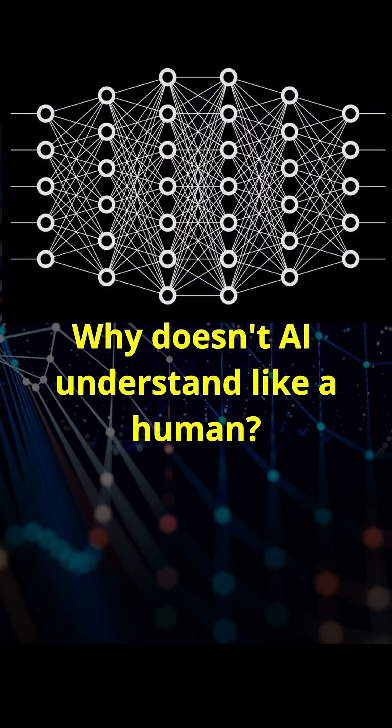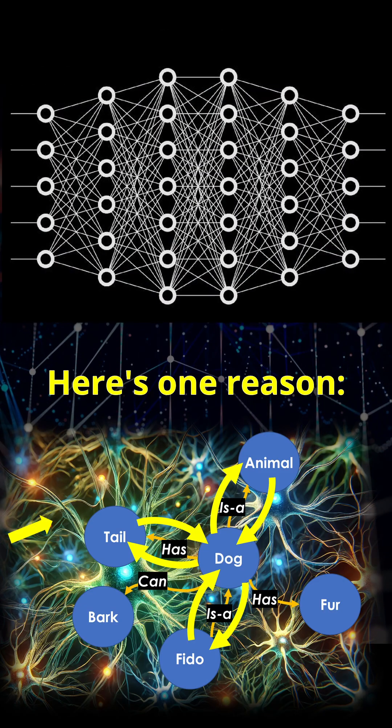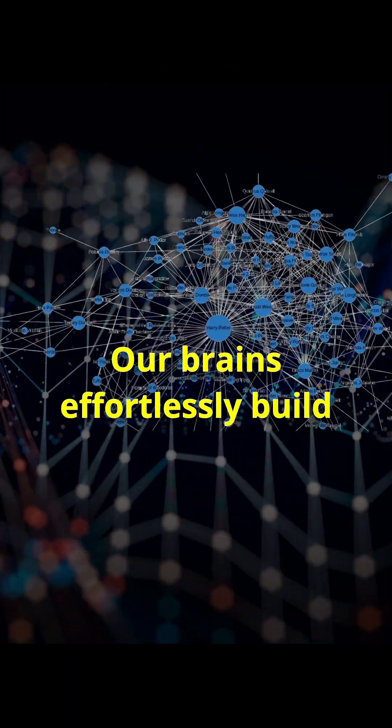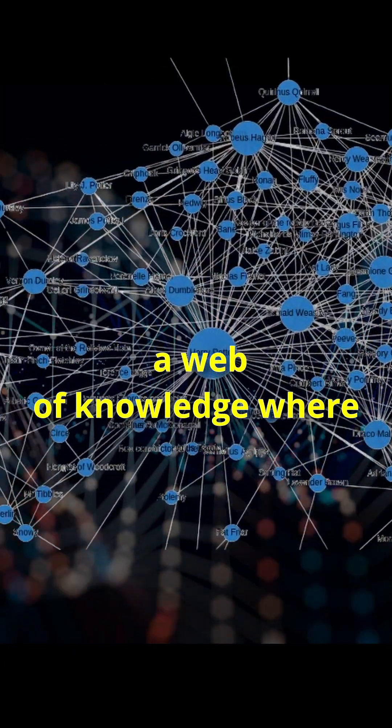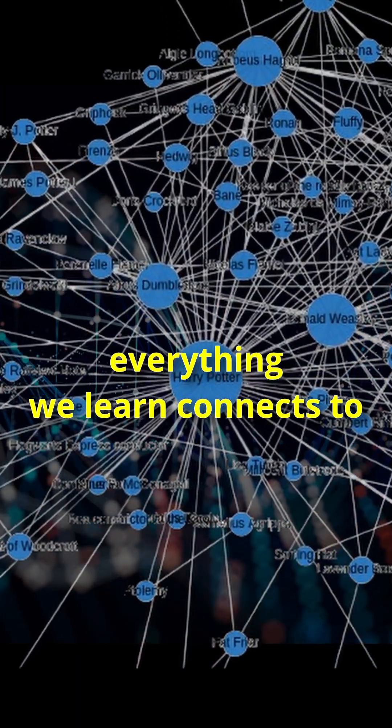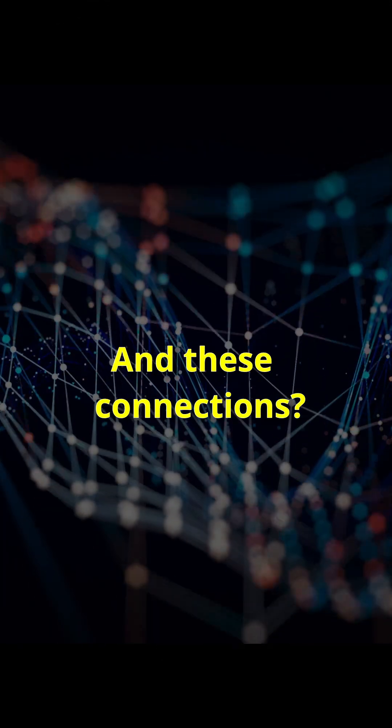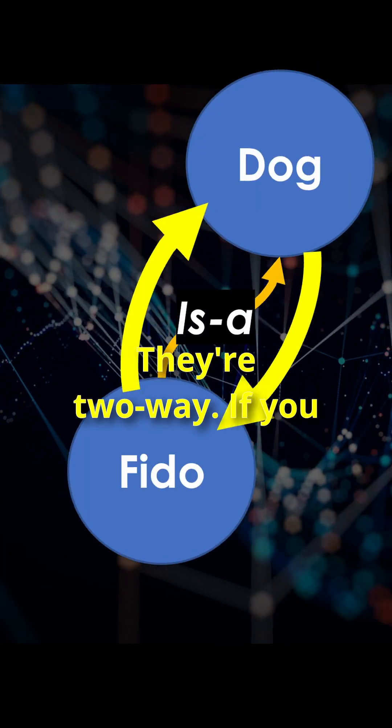Why doesn't AI understand like a human? Here's one reason. Our brains effortlessly build a web of knowledge where everything we learn connects to everything else we know. And these connections? They're two-way.